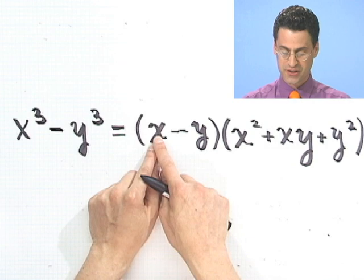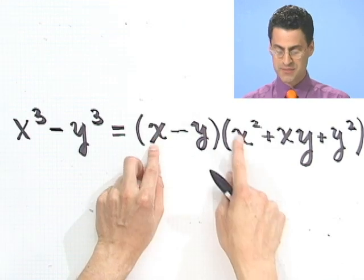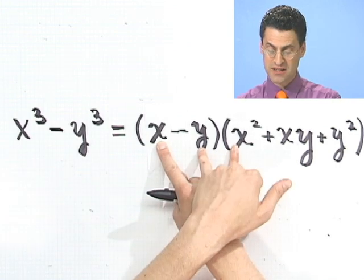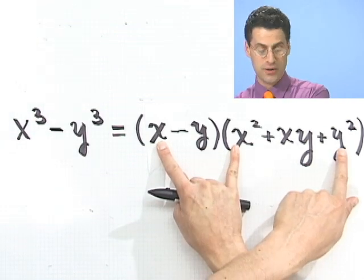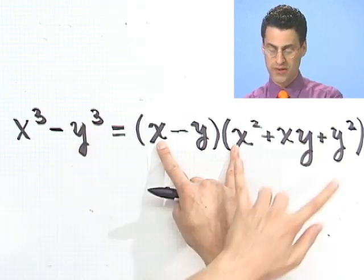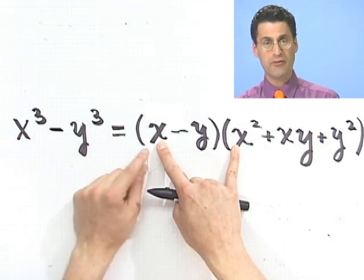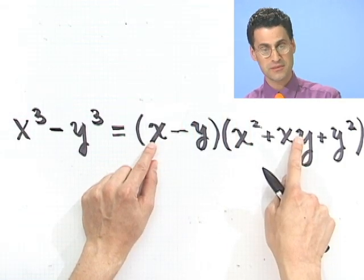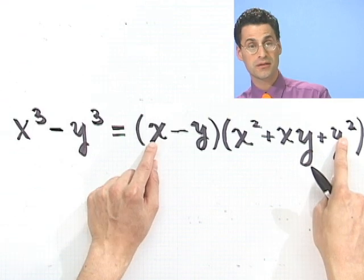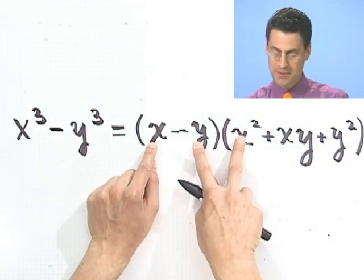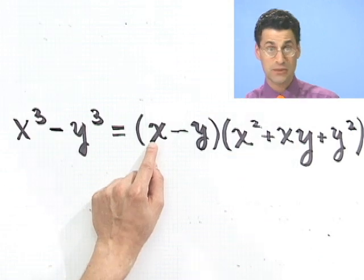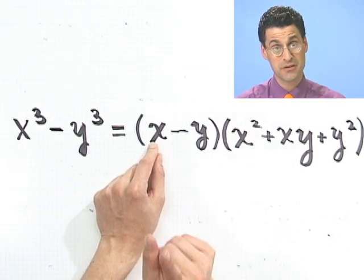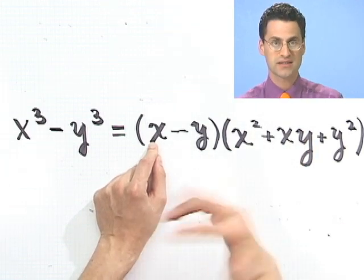Let's take that x and start to distribute it. The x times the x squared gives me the x cubed that I want. Notice that the minus y times the plus y squared gives me the minus y cubed that I want. Now I have all these middle terms. I've got to take x times this and x times that last term, and then the minus y times this and the minus y times that.